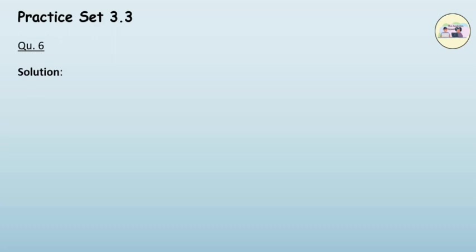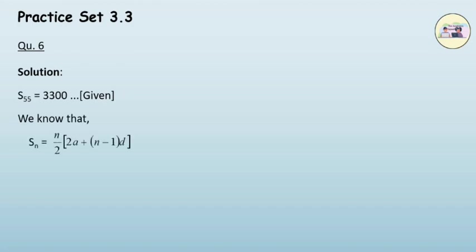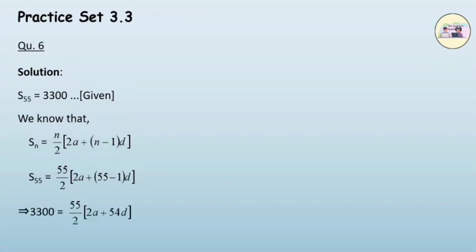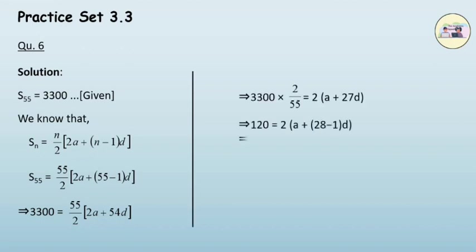Solution. It is given that S(55) = 3300. We know that S(n) = n/2 × (2a + (n−1)d). Putting in the values: S(55) = 55/2 × (2a + (55−1)d). We know S(55) = 3300, so substituting we get 3300 = 55/2 × (2a + 54d). On solving, we get the equation 60 = a + (28−1)d.